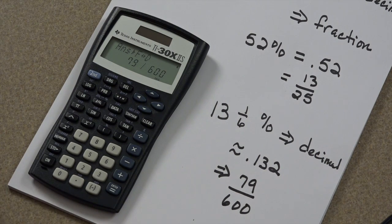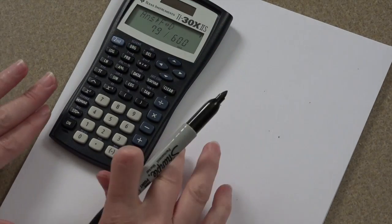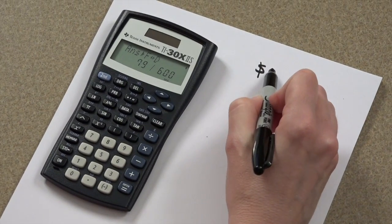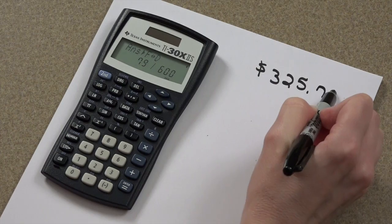Now, that saves a lot of work. The last thing I want to introduce is finding things like sales tax or commissions. Okay. Let's say we're buying an item that costs $325.75.